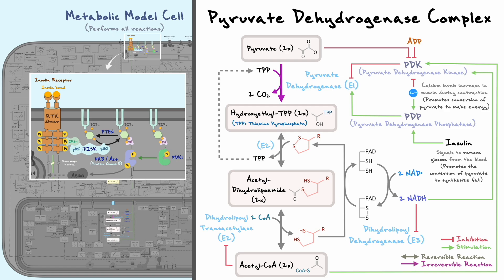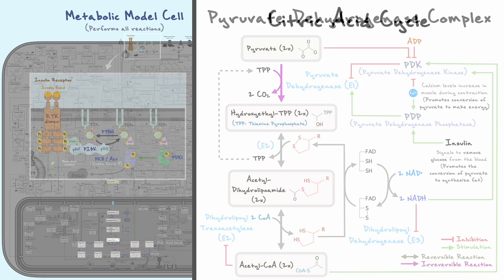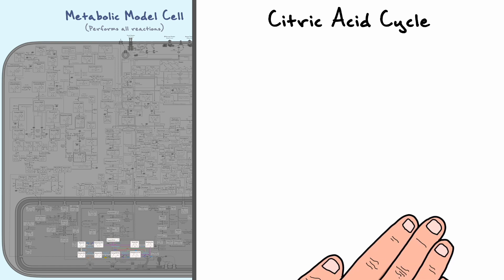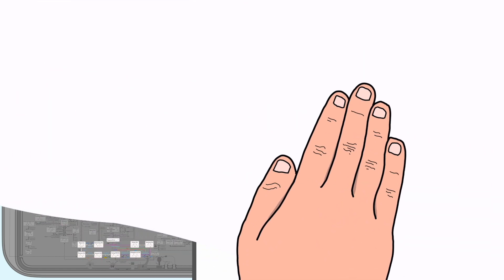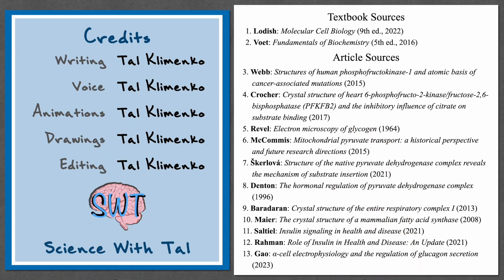With this being said, this concludes our discussion on the pyruvate dehydrogenase complex and its regulation, which means that we can move on to the citric acid cycle. If there was anything unclear or there was a mistake somewhere in the video, make sure to let me know in the comment section. If you enjoyed this video and found it useful, you can consider leaving a like and subscribing to support the channel. Thank you again for watching and I'll see you in our next discussion.